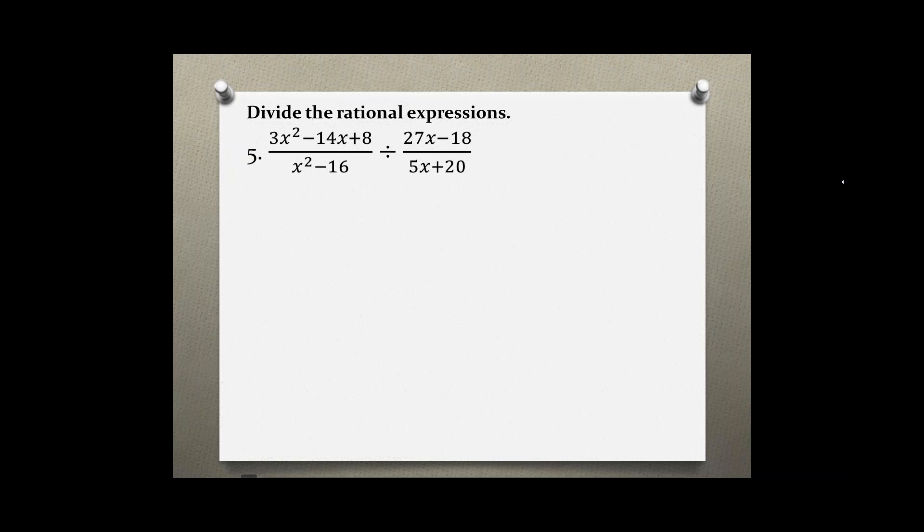In this problem we are dividing rational expressions, so we have to factor each individual part, use the rule for keep, change the sign to multiplication and flip, and then cross simplify everything possible. Let's start by factoring this top problem.